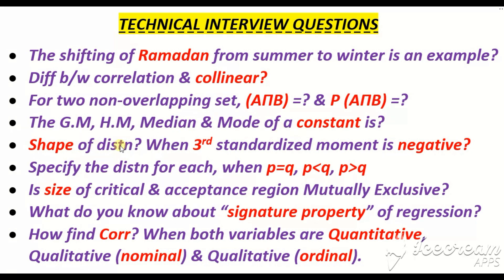Regarding the shape of distribution: when the third standardized moment is negative, first of all we must know that the third standardized moment is called beta1, which is the coefficient of skewness. Its formula is mu3 divided by mu2 raised to the appropriate power — that is the third standardized moment. If the value of beta1 is negative, then the distribution is negatively skewed, meaning the left tail is prolonged as compared to the right tail.